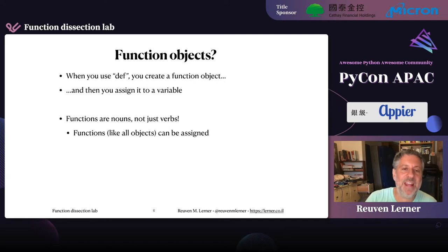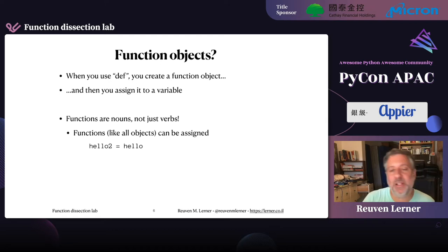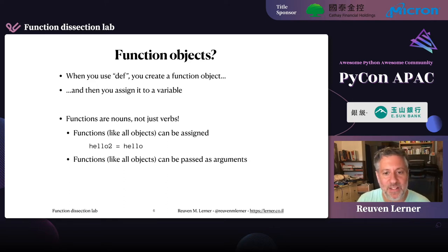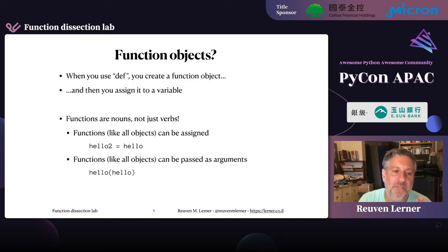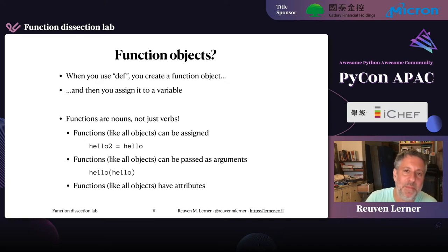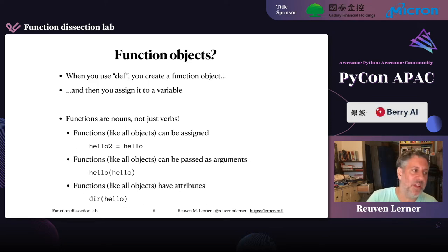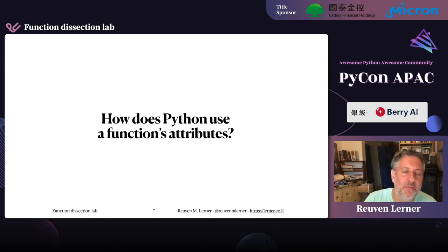Functions, like all objects, can be assigned. For example, I can say hello2 equals hello, and now hello2 and hello are two variables referring to the same function object. Functions, like all objects, can be passed as arguments. Moreover, functions, like all objects, have attributes — those things that come after the dot. So I can find out what attributes a function has, just like any other object, by running the dir function on it. But what really is going on, and how does Python use a function's attributes?